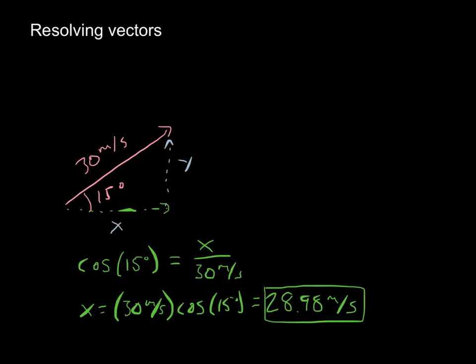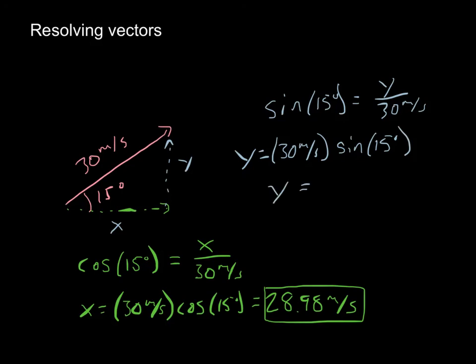So then to go find the y direction, well that's the opposite side on my triangle. So I have hypotenuse and opposite, so that's my sine component. So sine of 15 degrees is equal to y over 30 meters per second. So y is equal to 30 meters per second times the sine of 15 degrees. So y is equal to 7.76 meters per second.